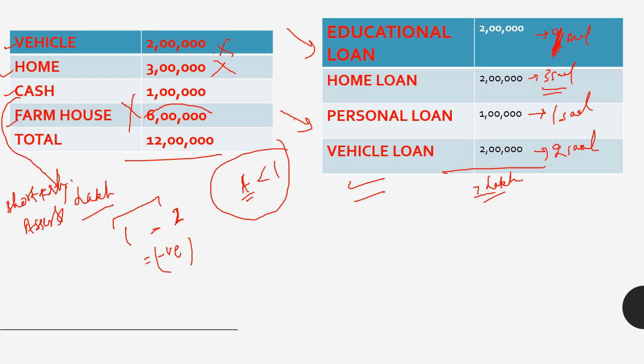I hope you now understand equity, solvency, and liquidity. Solvency is the overall financial position. Liquidity is whether short-term assets can cover short-term liabilities within one year. There are also liquidity ratios such as quick ratio, cash ratio, and current ratio. For solvency, there are ratios like debt service coverage ratio, interest coverage ratio, debt ratio, and debt-to-equity ratio.